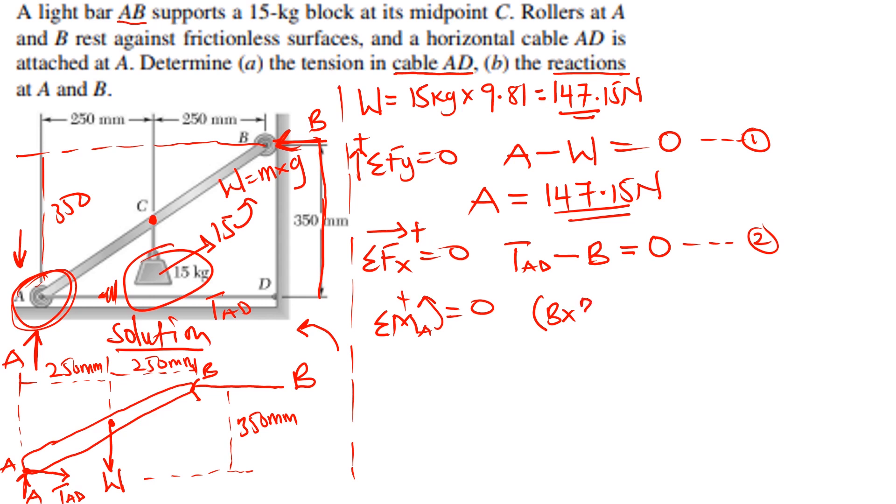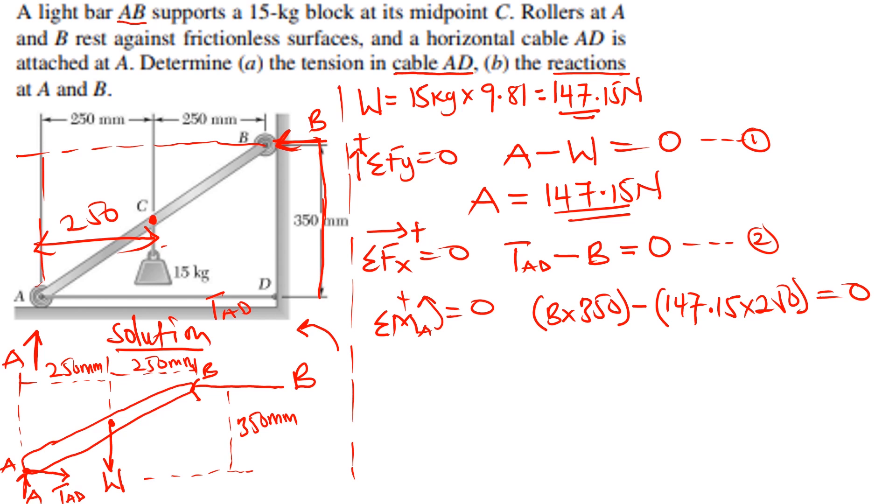That is going to be B multiplying 350 and the weight is also going clockwise. So that is going to be a negative force. And we are going to have the weight, 147.15. And what is the distance from the width? The distance from the width to the moment center is also 250. So we are going to have 250 and equate everything to zero. From here, we can make B the subject. This is going to be 350B equals 36787.5. Meaning my B is going to be 105.11 newtons. So we also know the reaction at B, which is 105.11 newtons.